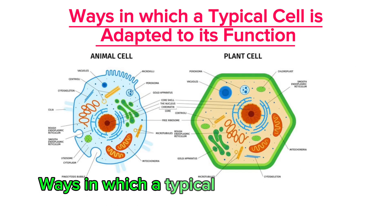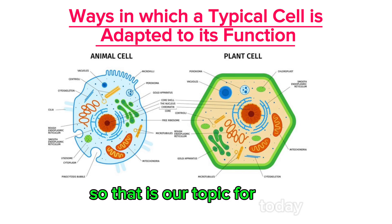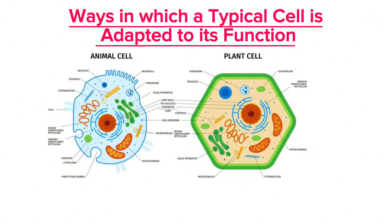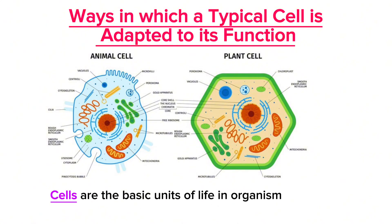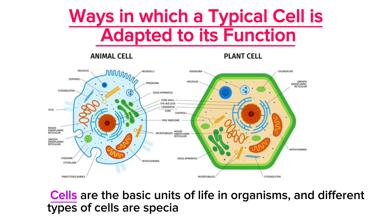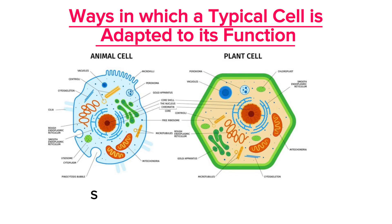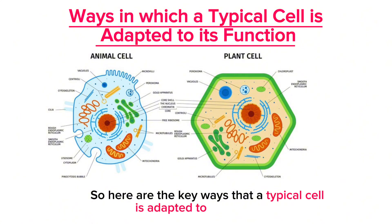Ways in which a typical cell is adapted to its function — that is our topic for today. Welcome to Teacher Geo's channel. As you all know, cells are the basic units of life in organisms, and different types of cells are specialized to perform specific functions. These adaptations allow cells to carry out their roles efficiently. Here are the key ways that a typical cell is adapted to its functions.